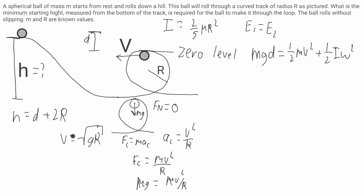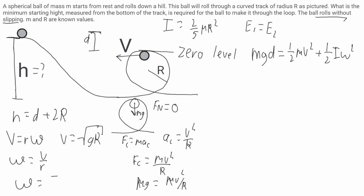Now I need to find omega. Because the ball rolls without slipping, I can use the relation v = r·ω, where r is the radius of the ball. Solving for angular velocity: ω = v/r. Plugging in v = √(gR), I get ω = √(gR) / r.